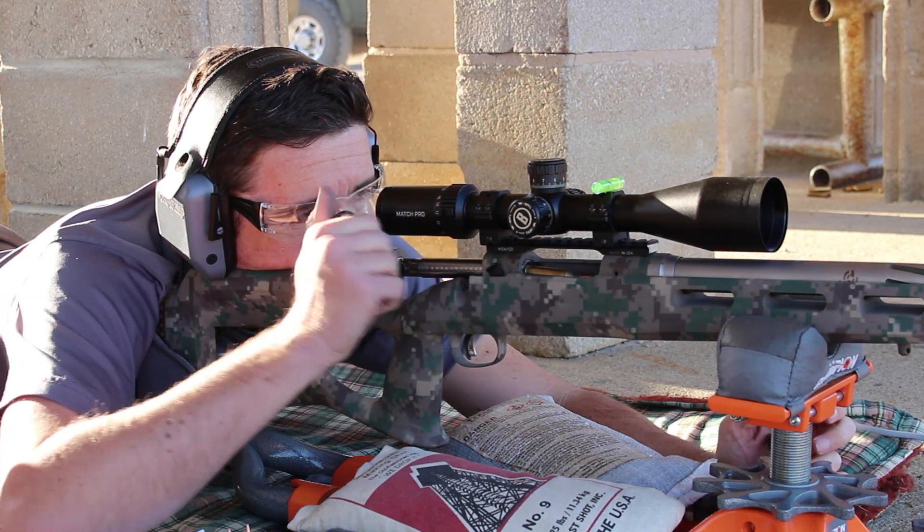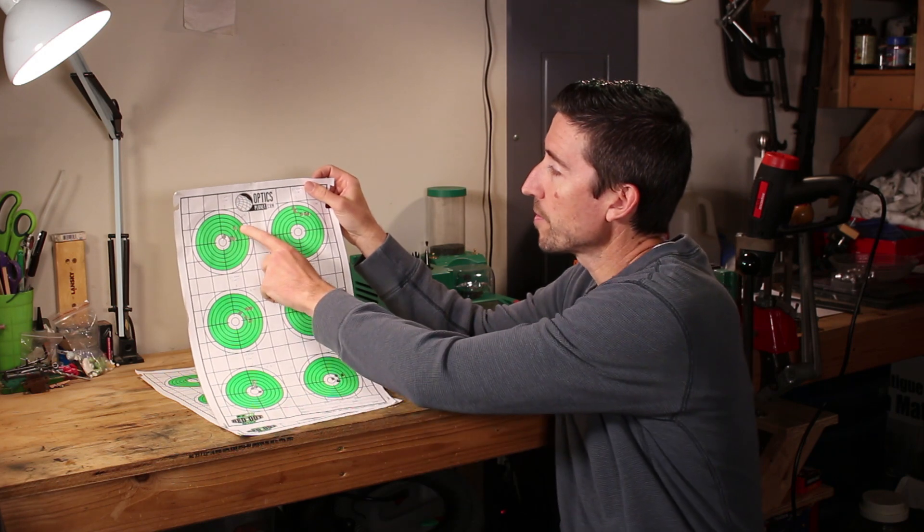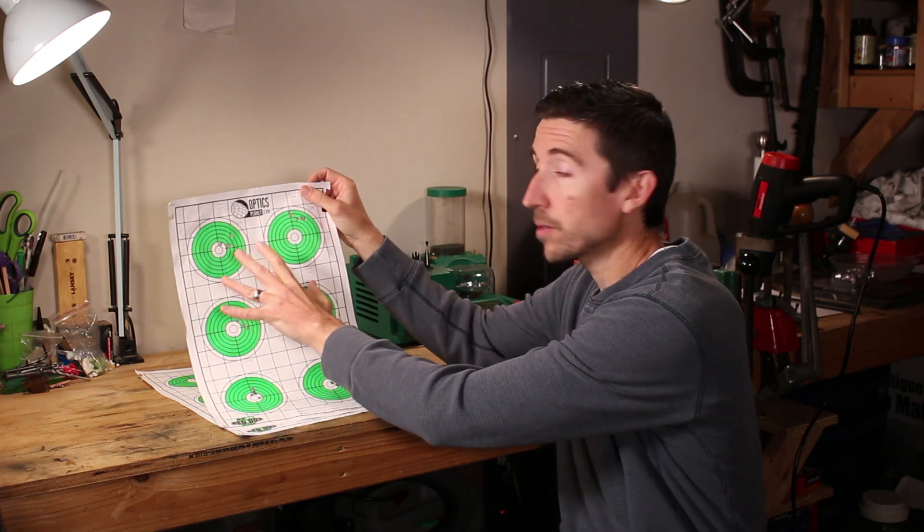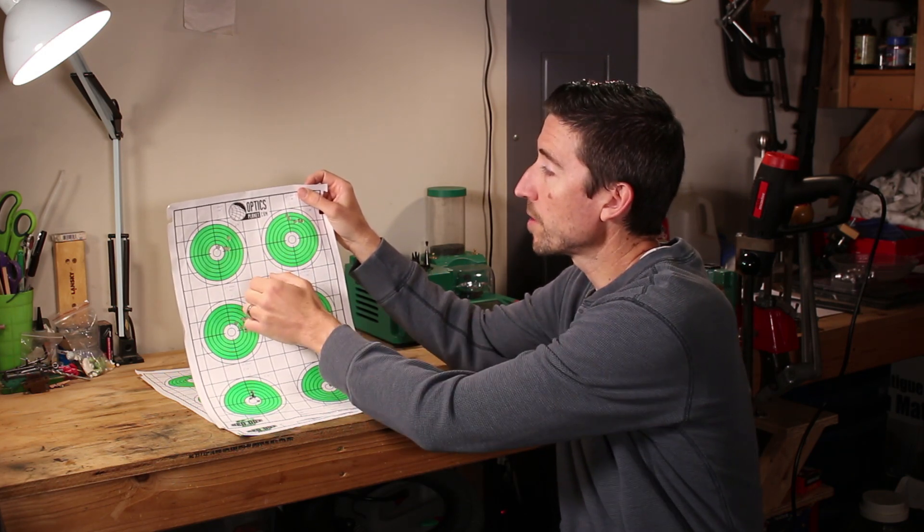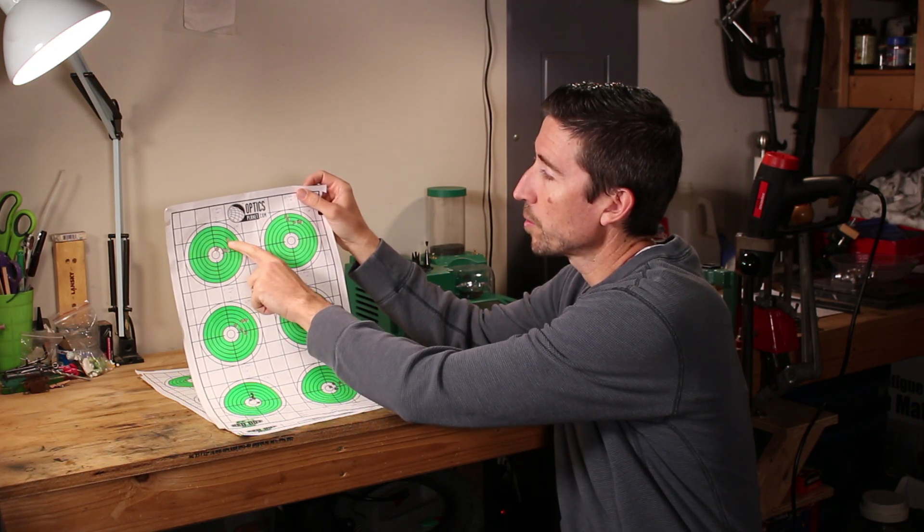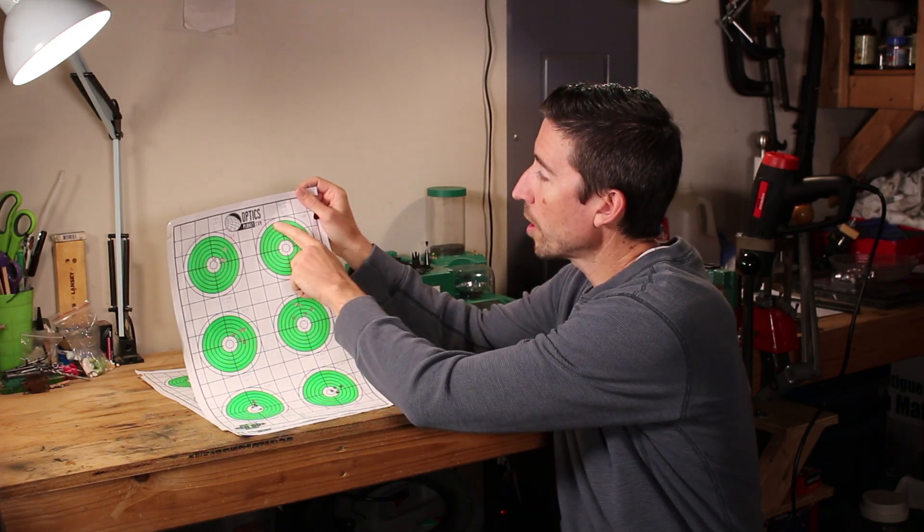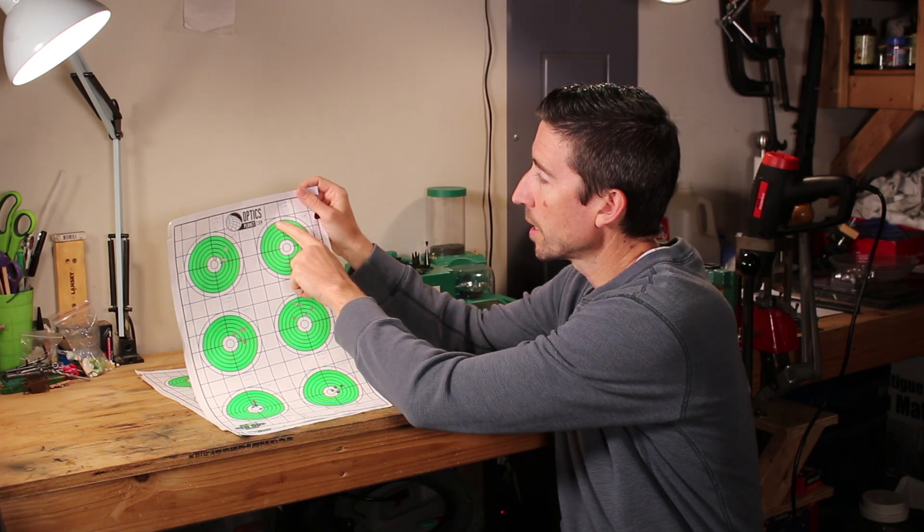Up top we have 87 grain V-max. So these are all five-shot groups. These are both 87 grain V-max up here, same charge. This is two shots, two shots, one shot right there. That's 0.92 inches and 1.04 inches. We have this kind of crescent shape going on here.